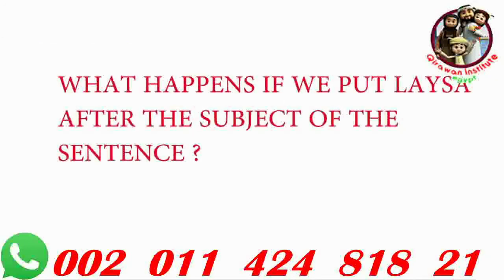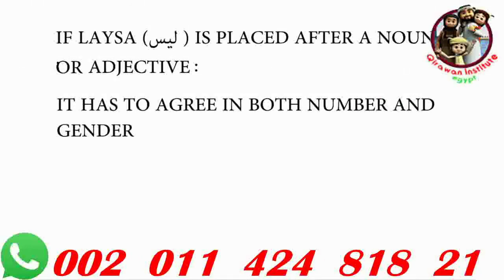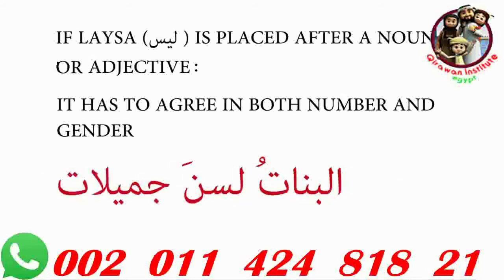Now let's examine what happens if we put leysa after the subject of the sentence. If we put leysa after a noun or an adjective that's the subject of the sentence, it has to agree in both number and gender. For example, elbinatu lesna jamilatin. Instead of using leysit as we did previously, now we have to use lesna, conjugated for both feminine gender and plural number. So putting the subject first complicates the situation and requires that you know all of the forms of the conjugation you learned previously.